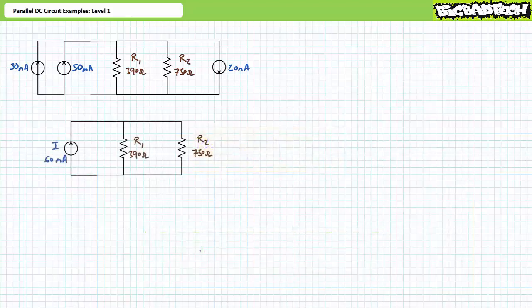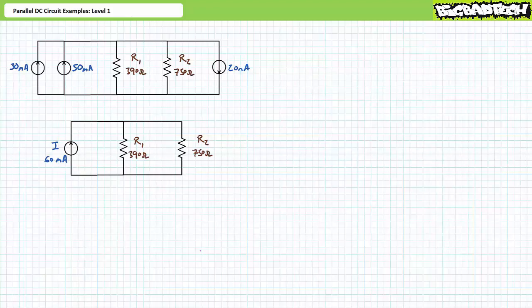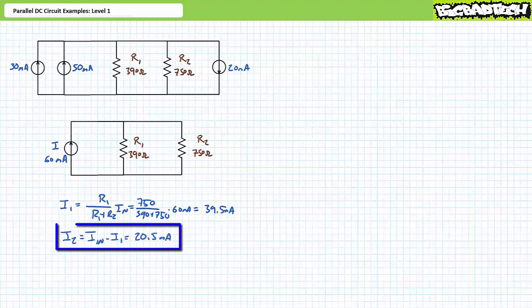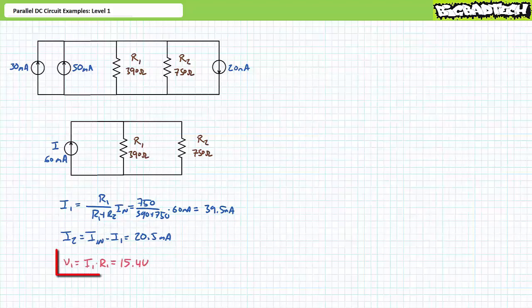Current sources in parallel add up: 30 plus 50 minus 20 yields a net current source of 60 milliamps. This 60-milliamp source is in parallel with R1 and R2 — a perfect setup for the current divider rule. Applying the current divider rule yields I1 of 39.5 milliamps; by KCL, I2 is the remaining 20.5 milliamps. Applying Ohm's law, the voltage across R1 is 15.4 volts, and by the parallel circuit property, all elements experience the same 15.4-volt differential.